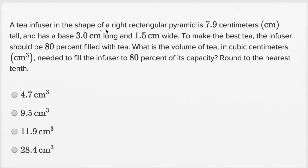A tea infuser in the shape of a right rectangular pyramid is 7.9 centimeters tall and has a base 3 centimeters long and 1.5 centimeters wide. To make the best tea, the infuser should be 80% filled with tea. What is the volume of tea in cubic centimeters needed to fill the infuser to 80% of its capacity? Round to the nearest tenth.